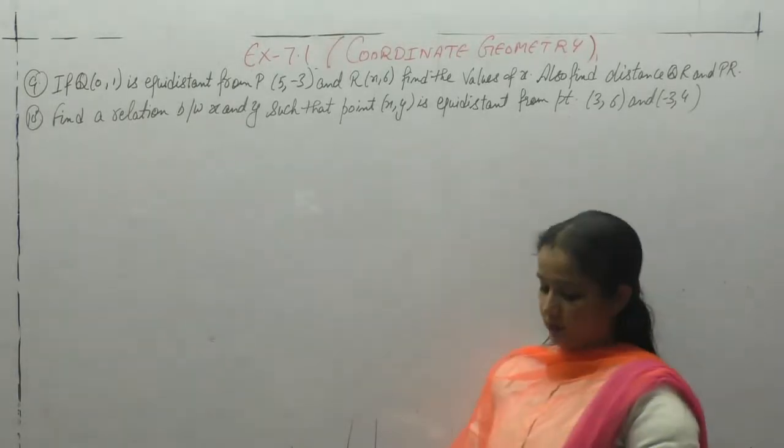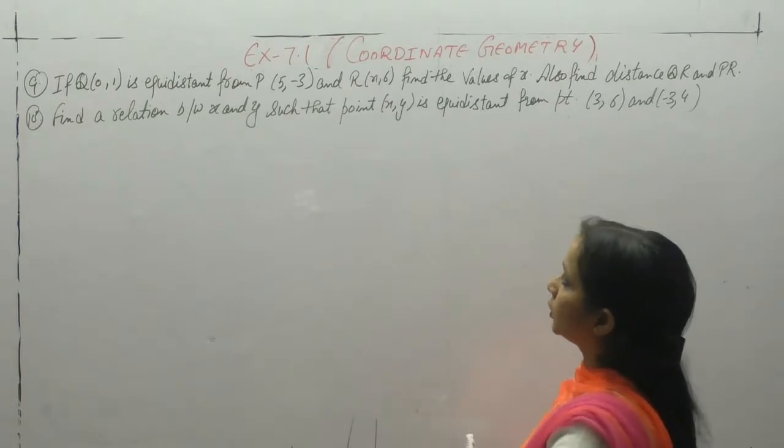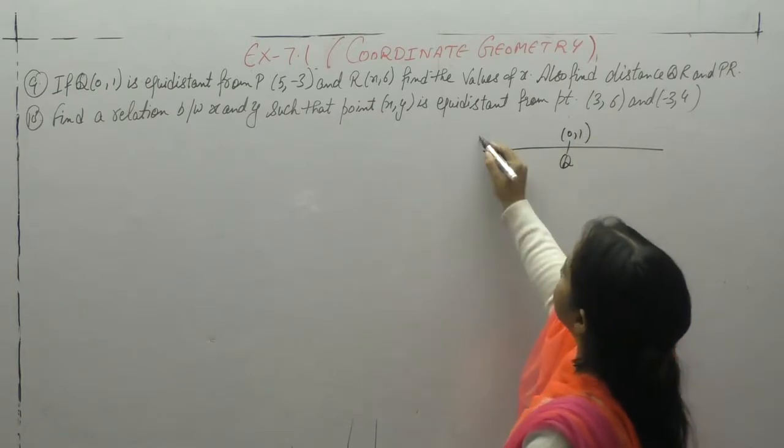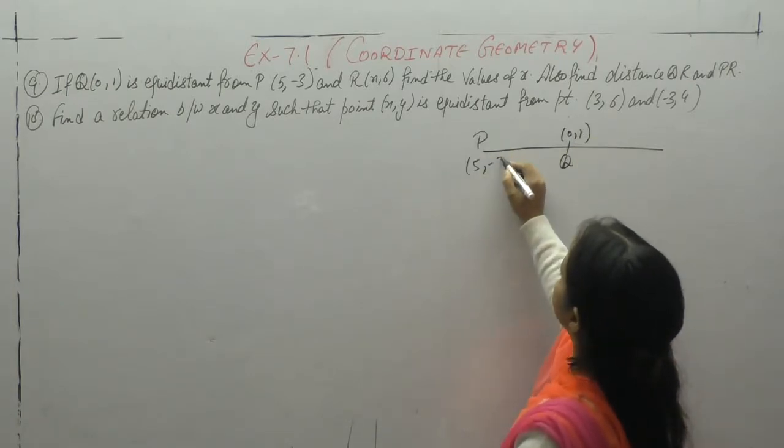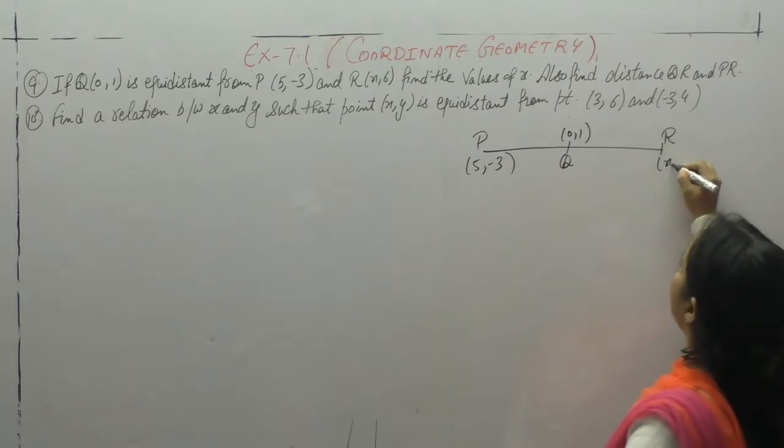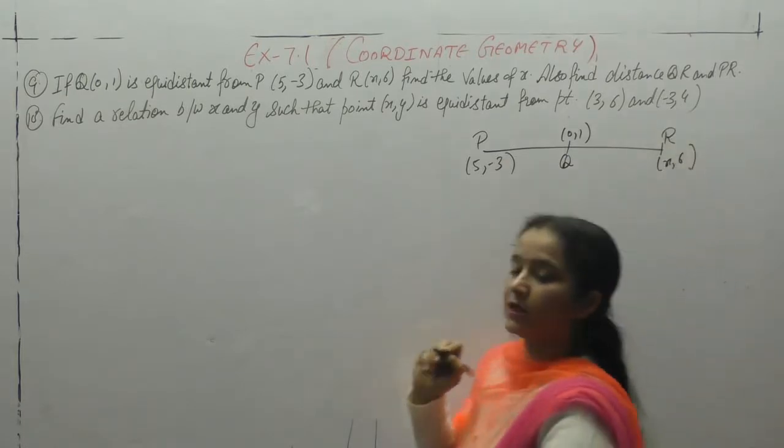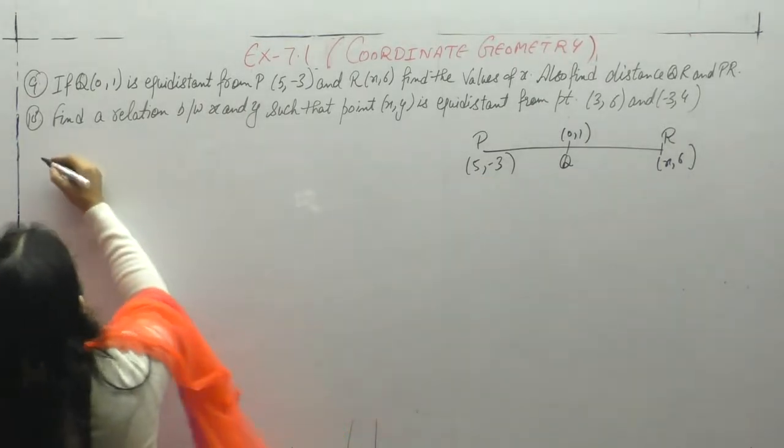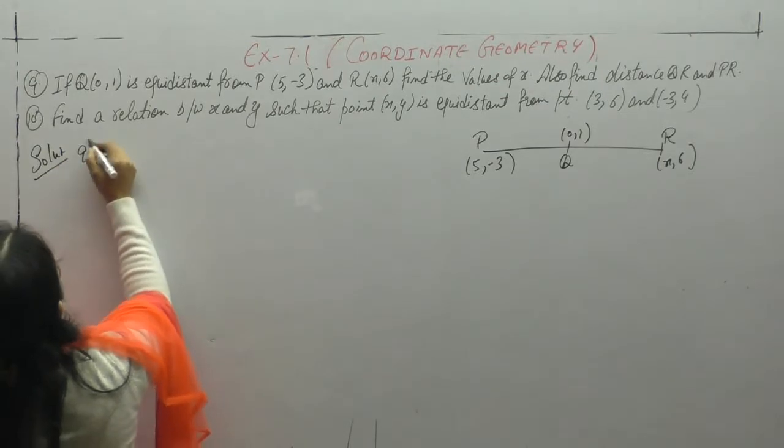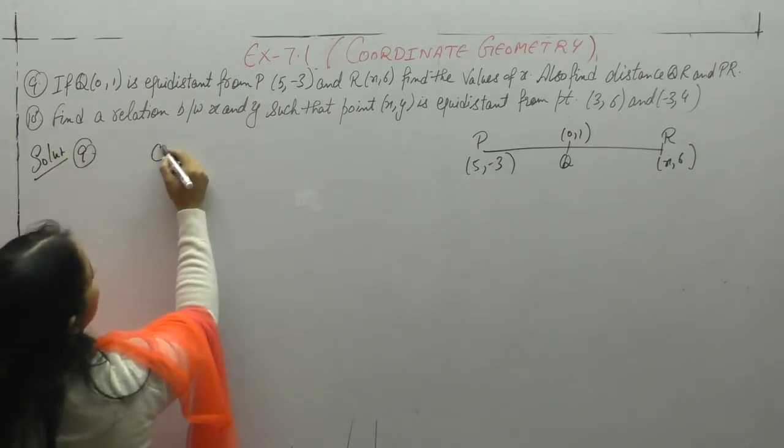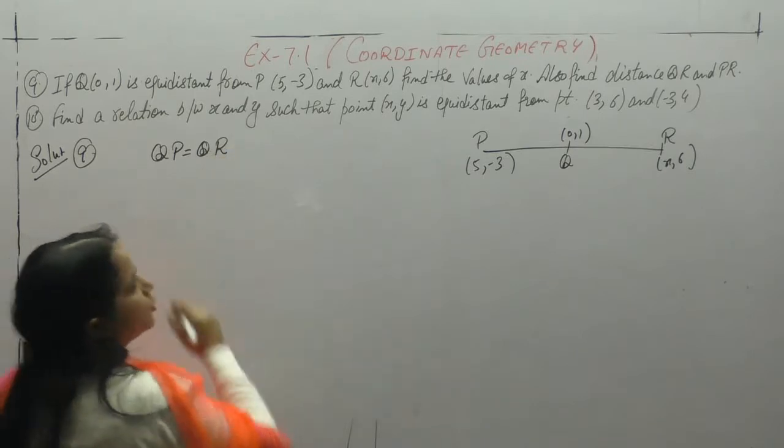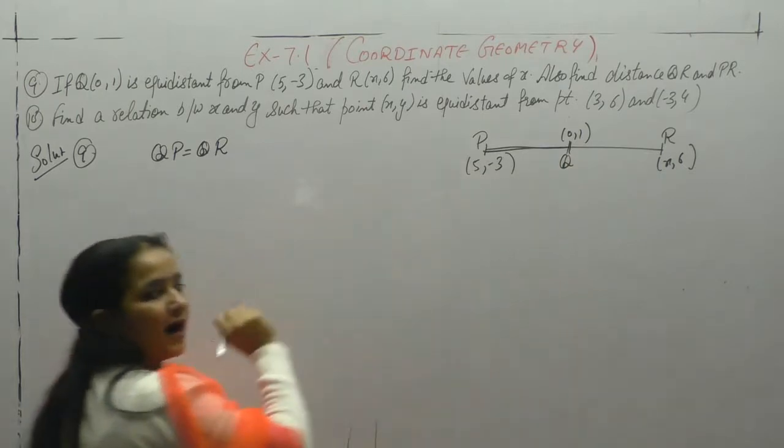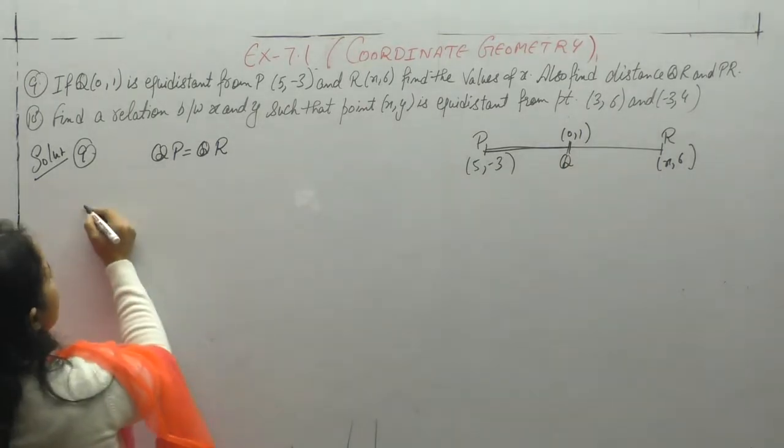Now next question. Question number 9: If Q(0,1) is equidistant from P(5,-3) and R(x,6), Q equidistant means PQ equals QR. QP is equals to QR. QP distance and QR both equal. Distance formula lagayenge.